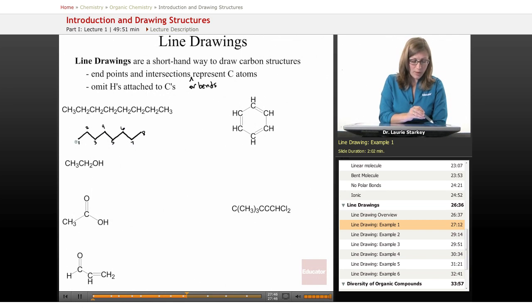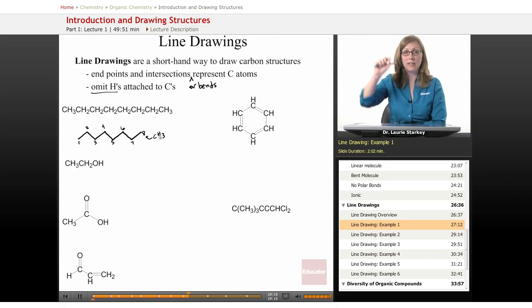And what we do is we draw the lines to represent the carbons, and then we omit the hydrogens that are attached to those carbons. We can do that because we know that carbon likes to have four bonds to be stable. Any neutral carbon is going to have four bonds. So we know that this end carbon has just one bond shown to a carbon. We know the other three bonds must be to hydrogen. So this must be a CH3.